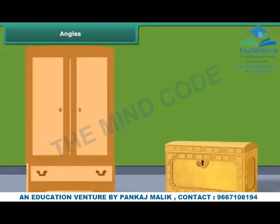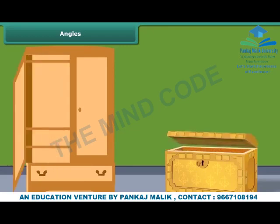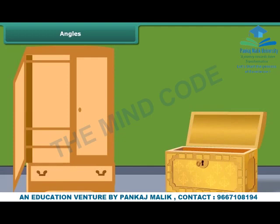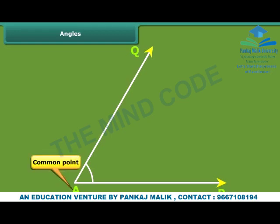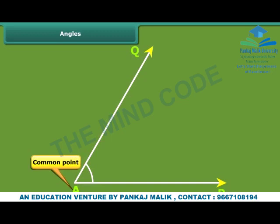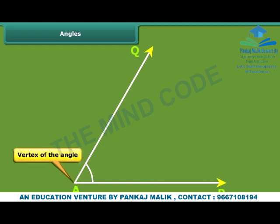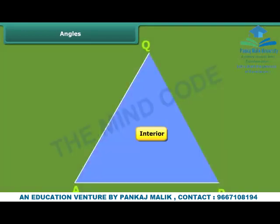The open door of an almirah or a box forms an angle. In the language of mathematics, when two rays start from a common point, we say that an angle is formed. In the given angle, ray AP and ray AQ have a common point A. The two rays forming an angle are called the arms or sides of the angle, and the common end point is the vertex. The angle is named as angle PAQ — note that the vertex is written as the middle letter. The interior and exterior of the angle are denoted by different colours.